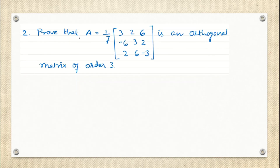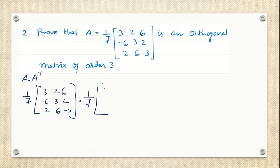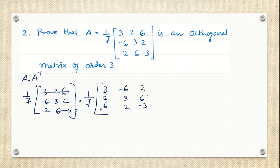Now the second question: prove that A = (1/7) × [3, 2, 6; −6, 3, 2; 2, 6, −3] is an orthogonal matrix of order 3. The 1/7 is a scalar multiplication. For simplicity, we keep the 1/7 aside. We write A × AT — A is (1/7) times the 3×3 matrix, and AT is (1/7) times the transpose, where each row is written as a column: first column [3, 2, 6], second column [−6, 3, 2], third column [2, 6, −3]. Multiplying 1/7 × 1/7 gives 1/49, and then we do the 3×3 matrix multiplication.